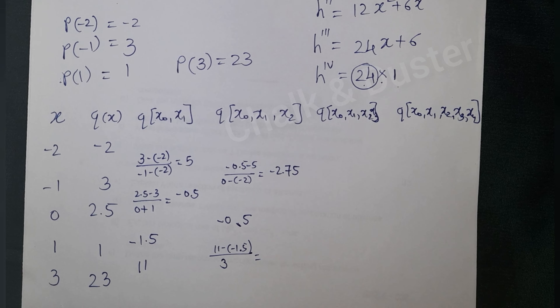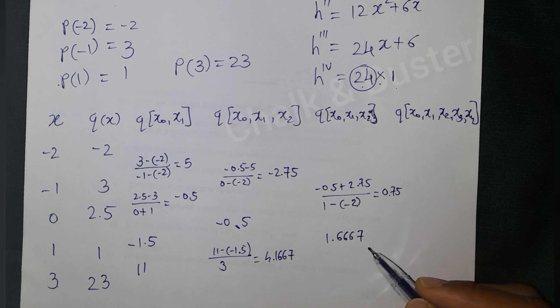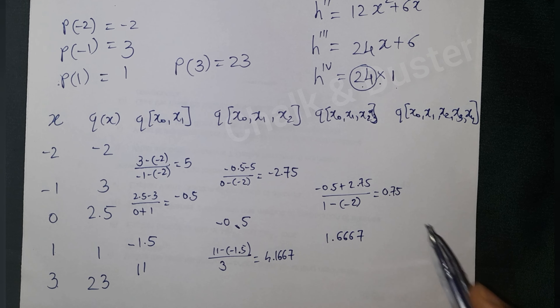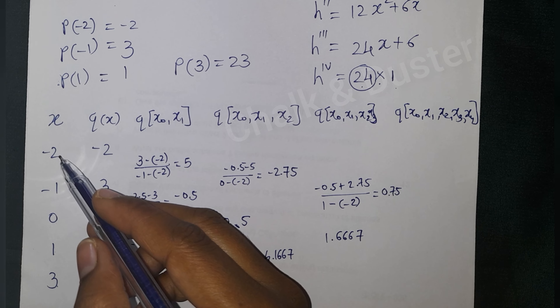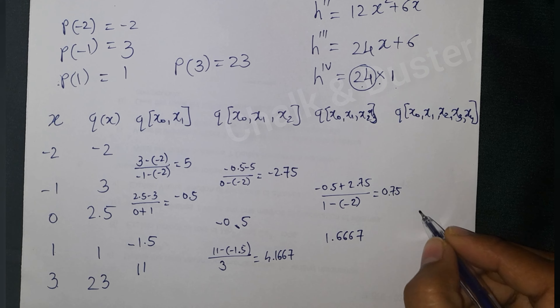For third divided differences: (-0.5 - (-2.75)) / (1 - (-2)) = 2.25/3 = 0.75. Then (4.1667 - (-0.5)) / (3 - (-1)) = 4.6667/4 = 1.6667. For the fourth divided difference: (1.6667 - 0.75) / (3 - (-2)) = 0.9167/5 = 0.0833.